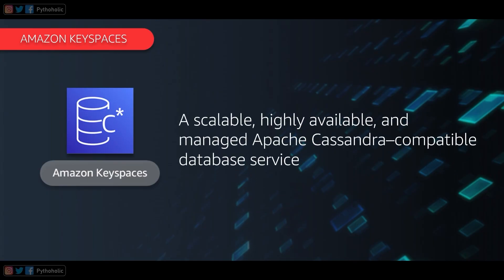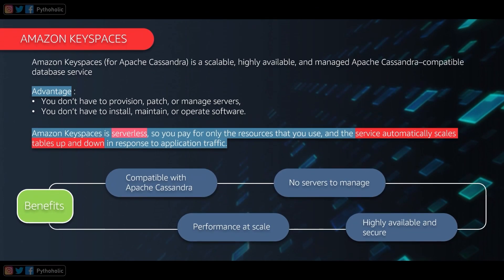Now we move on to a very special database which is AWS Keyspaces — a scalable, highly available, and managed Apache Cassandra compatible database service. Amazon Keyspaces for Apache Cassandra is a managed service. Just like we have RDS for Postgres, we have Keyspaces for Cassandra, and it's named after Cassandra's concept of keyspaces.